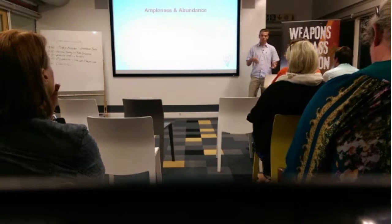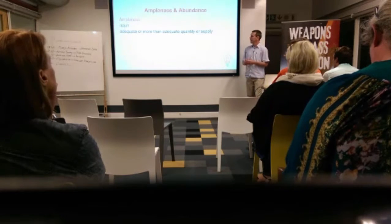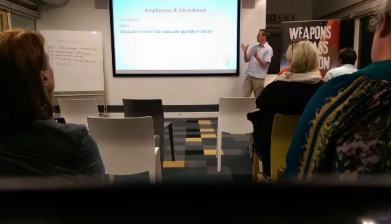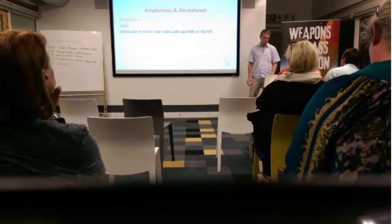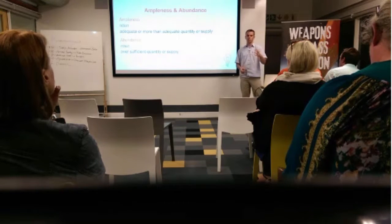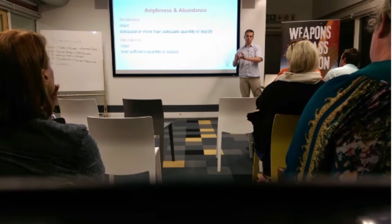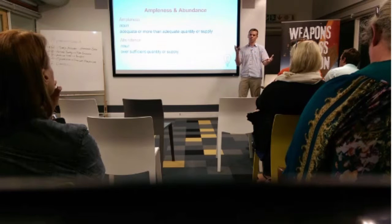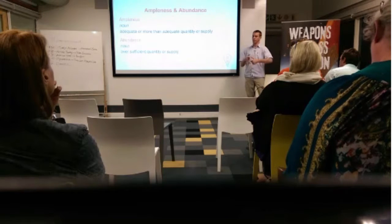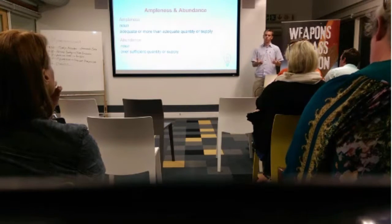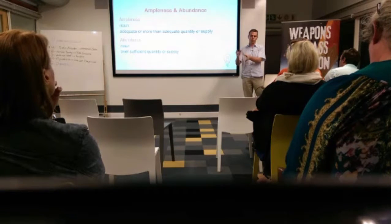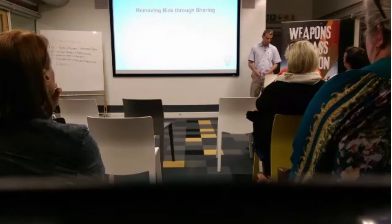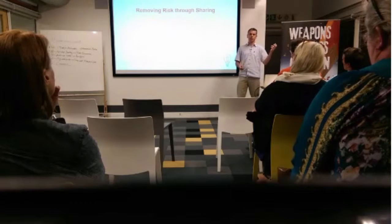Another concept: ampleness versus abundance. Ampleness means having adequate — enough, perhaps more than adequate. Abundance is the next step: you have more than you can ever use of something. I believe nobody can really have an abundance of money, because they can always use it for something else. But there are many things — knowledge, time, space — that you can have an abundance of, and if you're not going to use the extra part, it's lost forever.